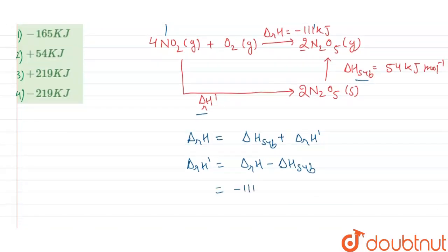So here given that delta RH is minus 111 kJ minus delta H of sublimation given as 54 kJ. By calculating this value we get delta RH is equal to minus 165 kJ which is our required heat change of here dash.